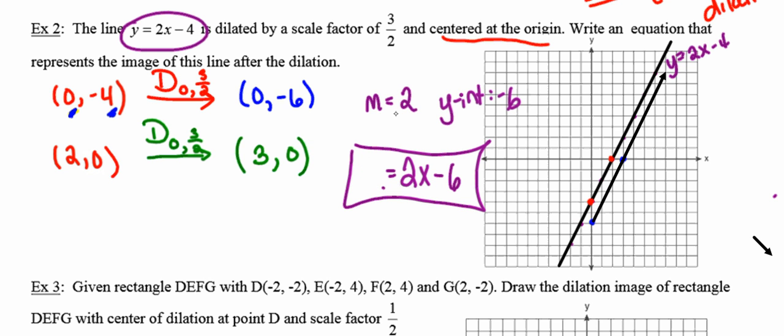you could put this in point-slope form and pick any point from that line and write the equation in point-slope form as well.